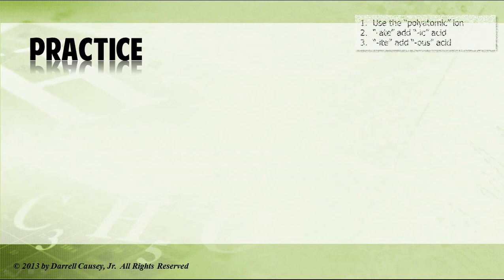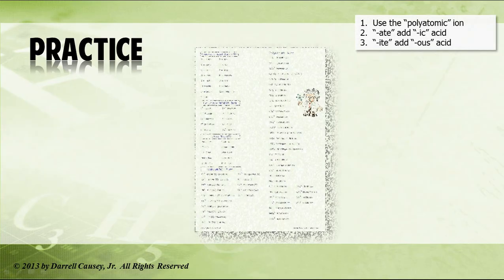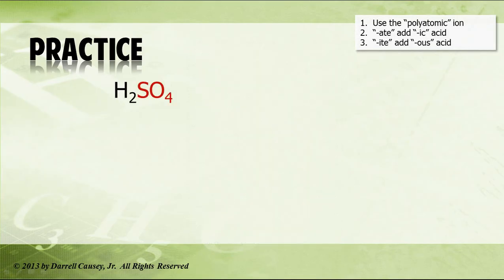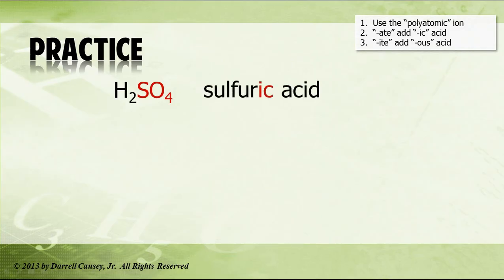Alright, let's practice a few. Up in the right-hand corner I've put a little box of the rules, and we need our polyatomic ion sheet. H2SO4: SO4 is sulfate, it ends in -ate, so I'm going to add -ic — sulfuric acid. We took the root sulfur, added -ic, and said acid.